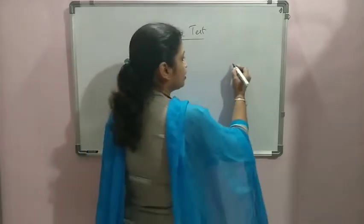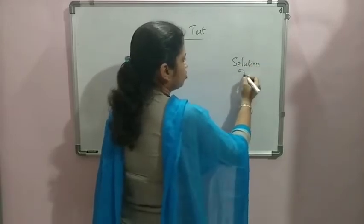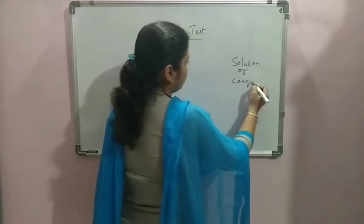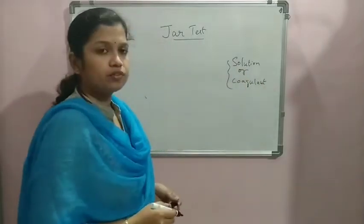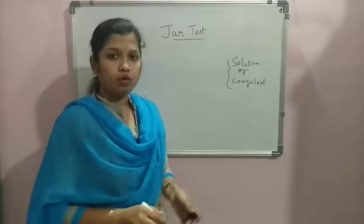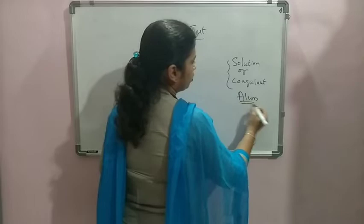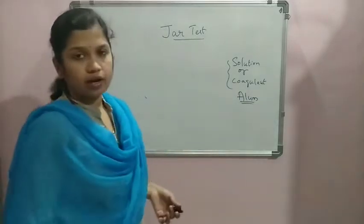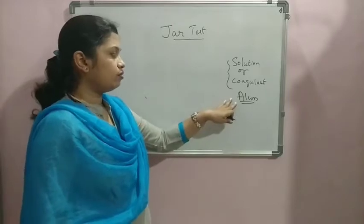How this is being done? First of all, we are going to prepare a solution of the coagulant. We can add it in powder form, but better is to prepare the solution of the coagulant which is of known concentration. Generally, alum is used for this experiment.